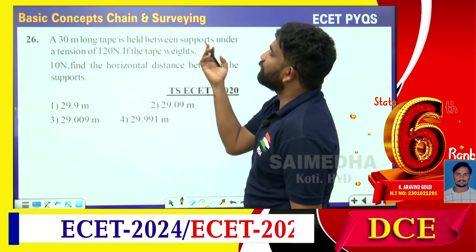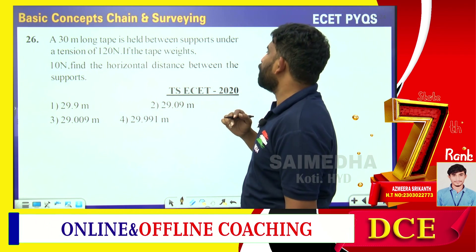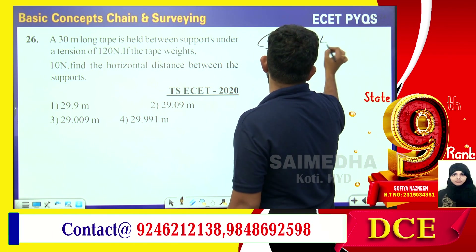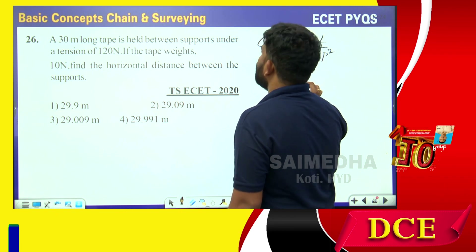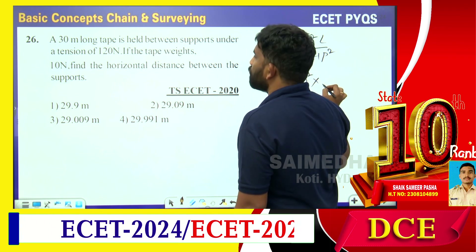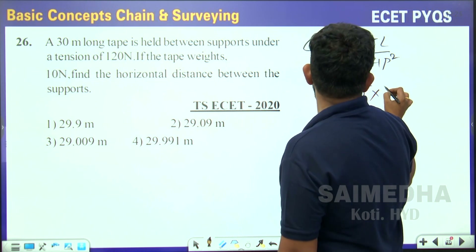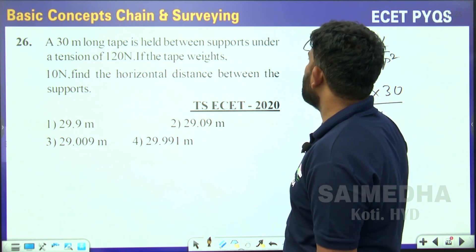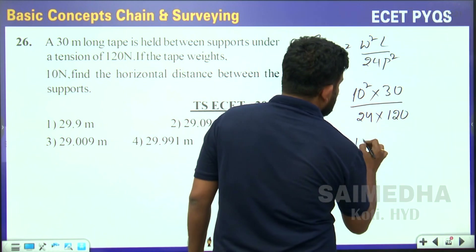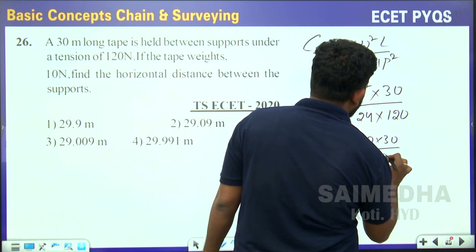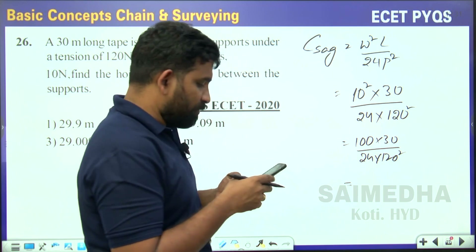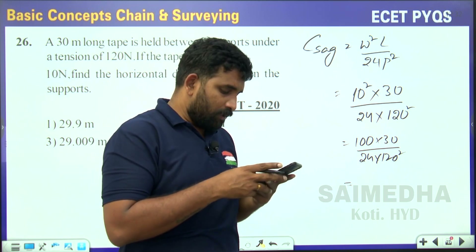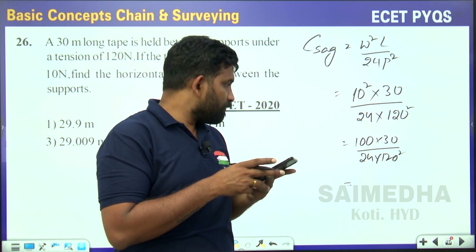Question 26: A 30-meter-long tape is held between supports under a tension of 120 Newtons. If the tape weighs 10 Newtons, find the horizontal distance between the two supports. This is the correction for sag. The formula is: correction = W² × L ÷ (24 × P²), where W = 10 N, L = 30 m, P = 120 N. So correction = 10² × 30 ÷ (24 × 120²) = 100 × 30 ÷ (24 × 14400).